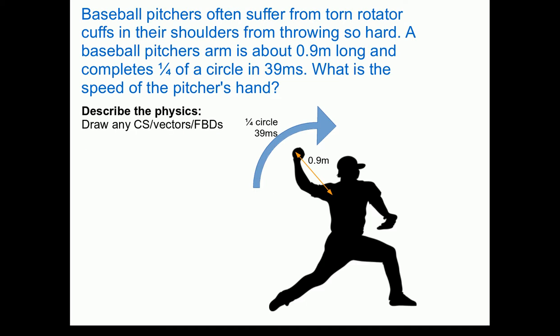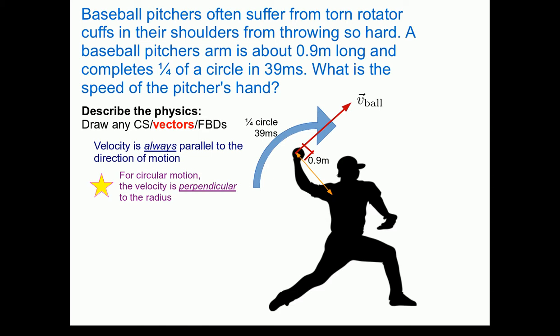Now let's describe the physics by drawing any coordinate systems, vectors, or free body diagrams. The one vector of interest here is the velocity of the ball — velocity is always parallel to the direction of motion. For uniform circular motion, the velocity is perpendicular to the radius. Since we're not interested in forces in this problem, we don't need free body diagrams. We also don't really need a particular coordinate system for this problem — that's a skill you'll develop as you do more problems.